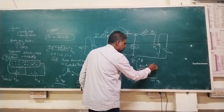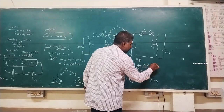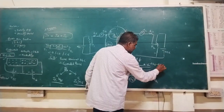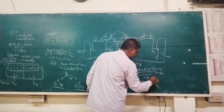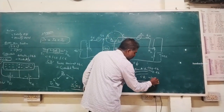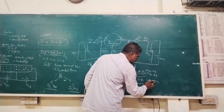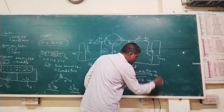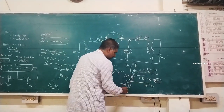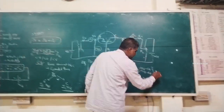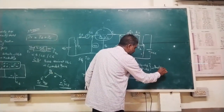In the active region, the input junction is forward biased while the output junction is reverse biased. In the cutoff region, both junctions are in the off state and behave as reverse biased. In the active region, the transistor acts as an amplifier.